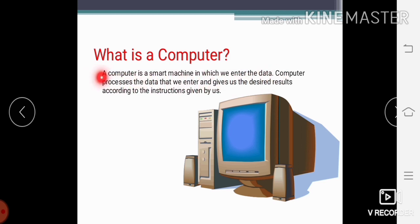A computer is a smart machine in which we enter the data. So computer is an electronic machine in which we enter something. Computer processes the data that we enter and gives us the desired results according to the instructions given by us. So it gives us the desired results after reading our instructions and it processes the data which we entered in it.